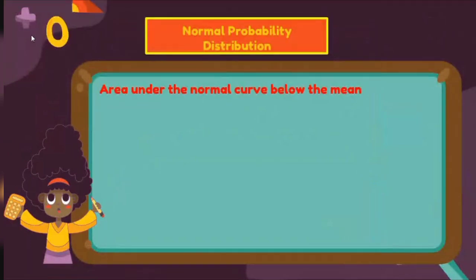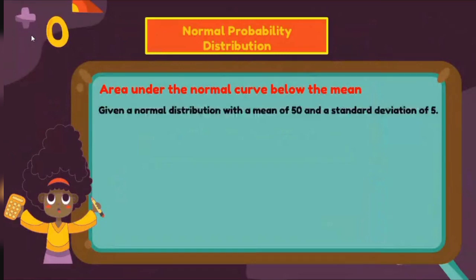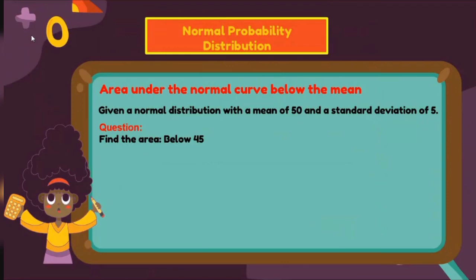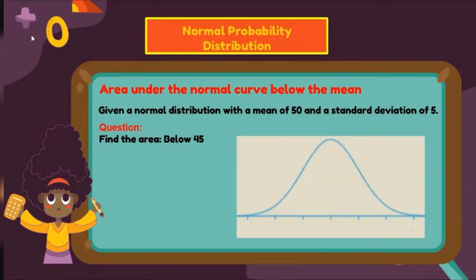Area under the normal curve below the mean — consider this given problem. Given a normal distribution with a mean of 50 and a standard deviation of 5, find the area below 45. For this type of problem, we are going to use the approach or steps in getting the area to the left of the z-score. First, construct a normal curve, then consider the values: mean equals 50 and standard deviation of 5.